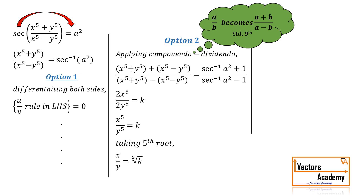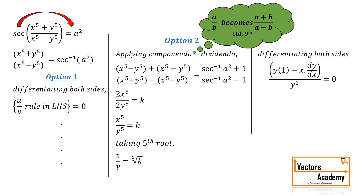Now we differentiate both sides. Applying the u by v rule is easy since the left hand side has simple terms. The derivative of the right hand side is 0. Cross multiplying by y squared, we get dy/dx is equal to y by x. You can try the first method too — you should get the same answer.